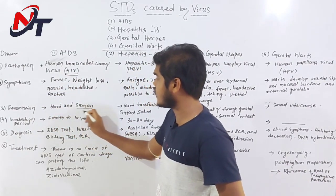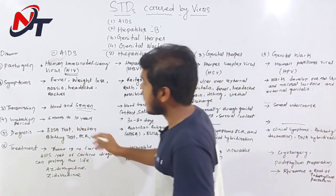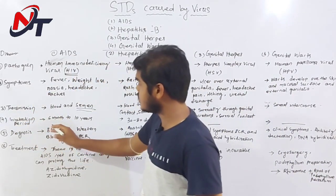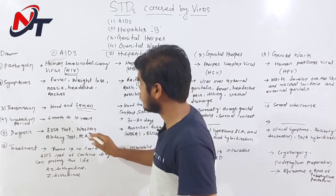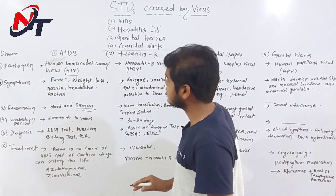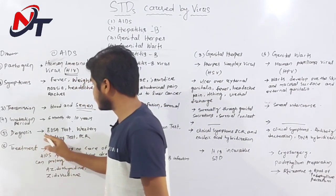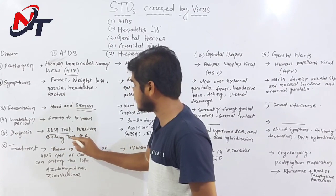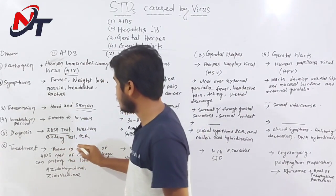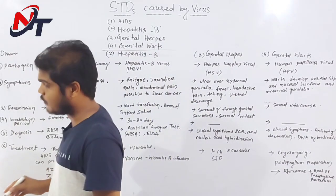The virus is transmitted through blood and bodily fluids. Transmission can also occur through other routes. The incubation period is 6 months to 10 years. Diagnosis is done using the ELISA test, Western blotting test, and PCR test.